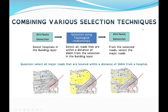Combining various selection techniques: first, attribute selection — for example, we select hospitals in the building layer. Second, selection using topological relationship — we select all roads that are within a distance of 200 meters from the selection in the building layer. Third, attribute selection again — from the selected roads, we select the major roads. This answers a question like: select all major roads located within 200 meters from a hospital.